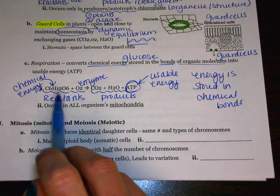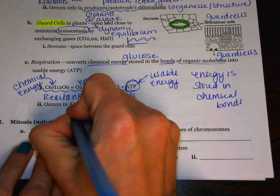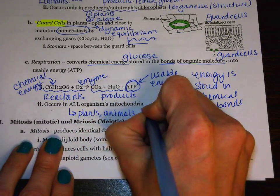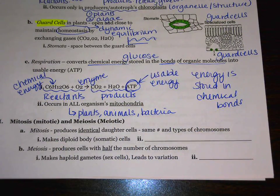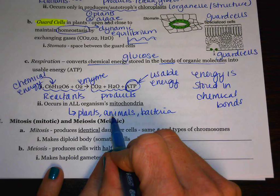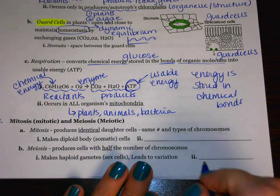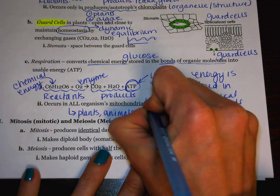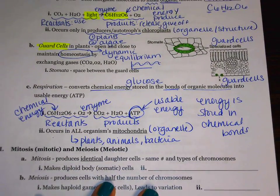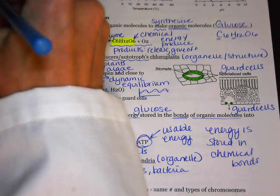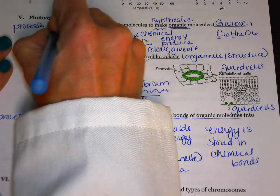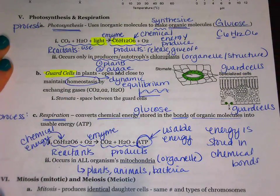Finally, this process — respiration — it occurs in all organisms. That means that plants, animals, protists, bacteria — all of these are undergoing respiration. Now, bacteria are prokaryotes, so they don't have mitochondria. But plants and animals, since they are eukaryotes, they do have a mitochondria. Remember, the mighty mitochondria is going to be where respiration takes place. The mitochondria is an organelle. One other thing to note is that when we're talking about something like photosynthesis or respiration, these both represent a process.